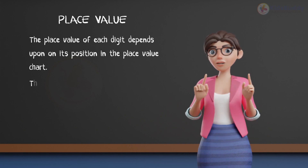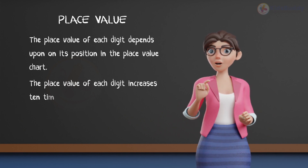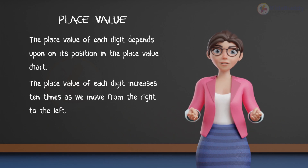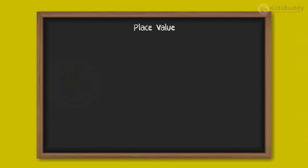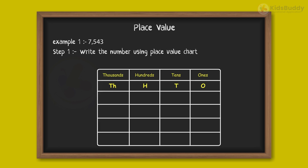The place value of each digit increases 10 times as we move from the right to the left. Let us understand this with the help of an example. Step 1: Write the number using the place value chart.